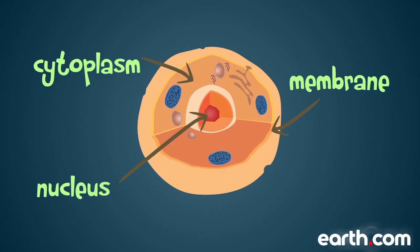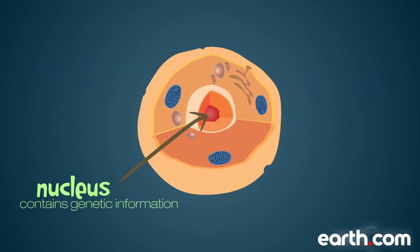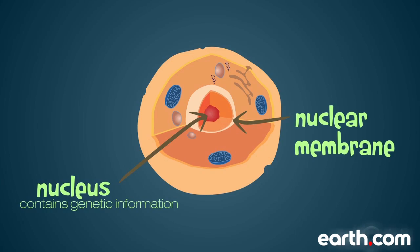The nucleus is the part of a cell that contains the genetic information. The nucleus is surrounded by a nuclear membrane that, like the cell membrane, makes a boundary around the nucleus.